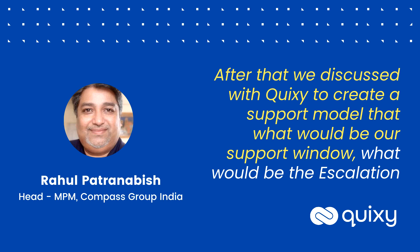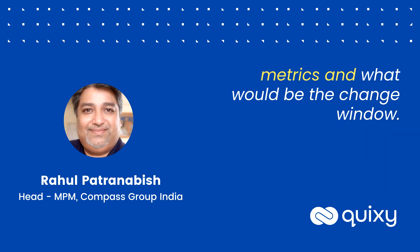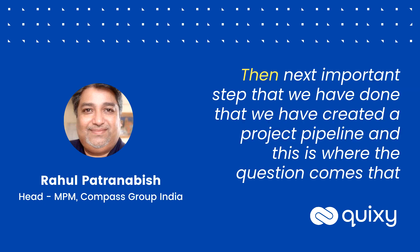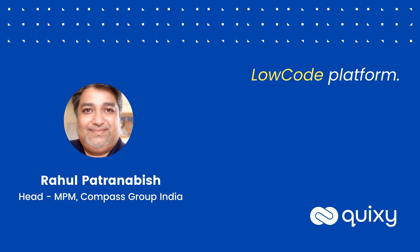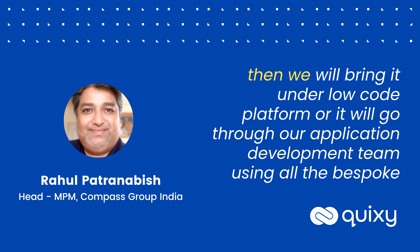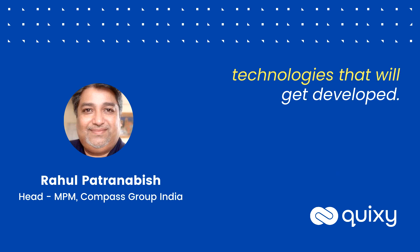After that, we discussed with Quicksy to create a support model — what would be our support window, what would be the escalation metrics, and what would be the change window. All of this was discussed and documented. Then the next important step was creating a project pipeline. This is where the question comes: what type of apps do you principally use a low-code platform for? We created a selection criteria — there are five or six questions, and if those questions are satisfied by a requirement, then we will bring it under the low-code platform; otherwise it will go to our application development team using bespoke technologies.